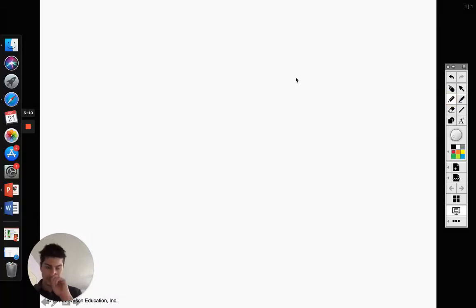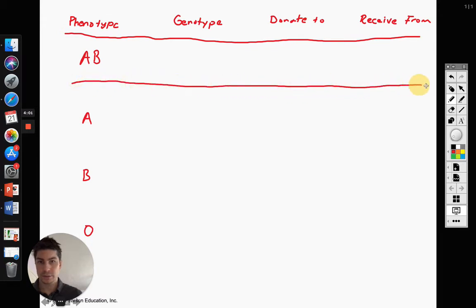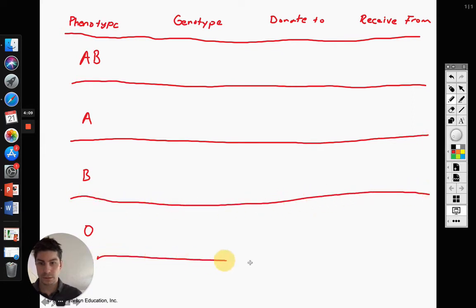So let's do some examples here. But first, before we do examples, let me go over everything with blood typing for us here. So let's do phenotype, genotype, who they can donate to, and who they can receive from. So phenotypes, you can be AB, can be A blood, you can be B blood, or you can be O blood here.